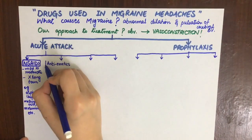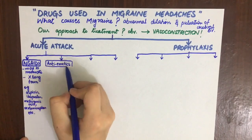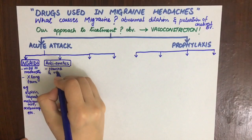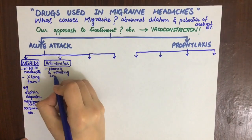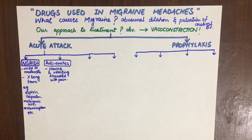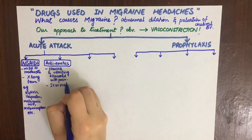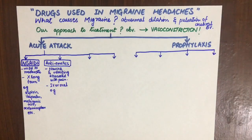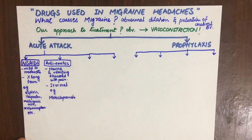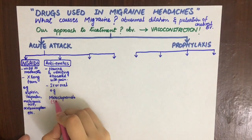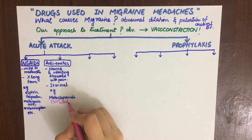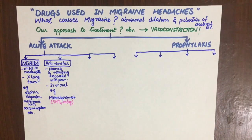The second choice is anti-emetics. They are used to treat the nausea and vomiting associated with the migraine attack, and can be given IV or orally. They are mainly 5-HT4 antagonists and H1 blockers. 5-HT4 receptors are present in the GIT; by blocking them we block vomiting. H1 blockers act in the chemoreceptor trigger zone and vestibular apparatus, which also decreases vomiting.